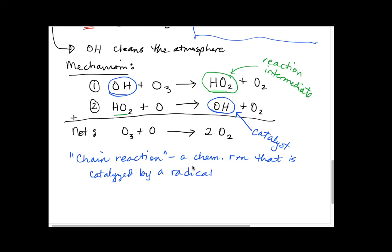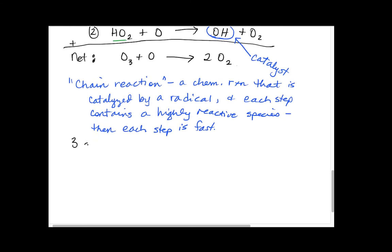When we have a chemical reaction like this one being catalyzed by a radical like hydroxyl, this is called a chain reaction. A chain reaction is a chemical reaction that is catalyzed by a radical, and each step contains a highly reactive species like a radical or something similar. This is important because if each step contains a highly reactive species, then each step is super fast and the whole reaction is very fast. Chain reactions have three stages: initiation, propagation, and termination.